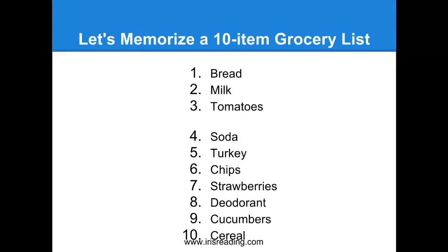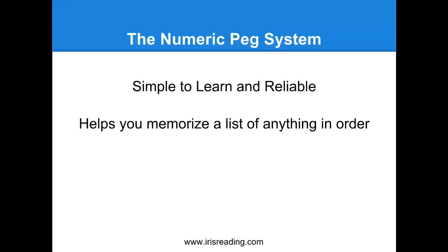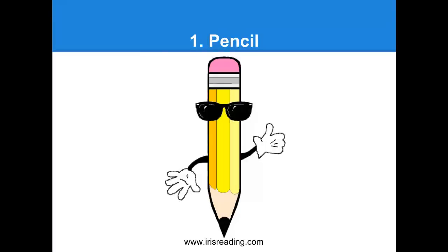Let's start with items 1 through 10. Before we memorize bread, milk, tomatoes, and all that, first we need to memorize what the Numeric PEG system is and how it works. The Numeric PEG system is simply taking each number and associating it with a visual. For example, number one is going to be a pencil. Look at that number one on your screen right now. I need you to memorize this — make sure you're actively visualizing, not just listening passively.